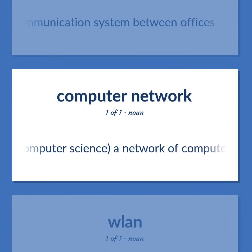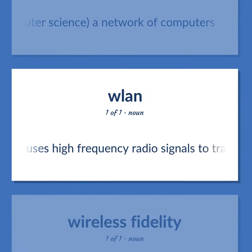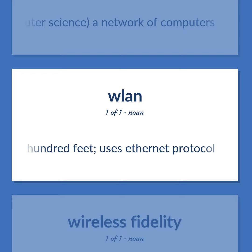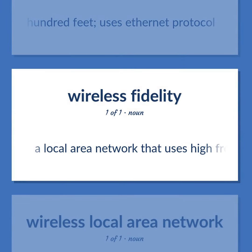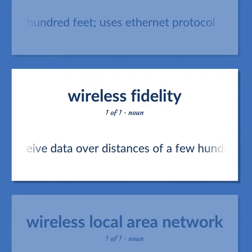Computer Science: A network of computers. A local area network that uses high-frequency radio signals to transmit and receive data over distances of a few hundred feet; uses Ethernet protocol.